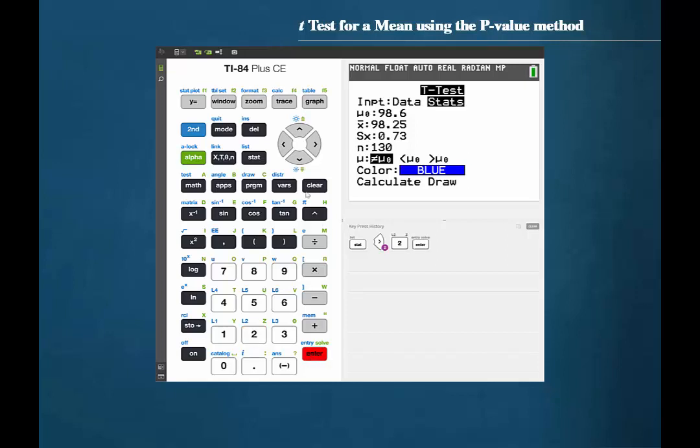Now cursor down and enter 98.6 for the hypothesized population mean. Cursor down and enter 98.25 for the sample mean. Cursor down and enter 0.73 for the sample standard deviation. Cursor down and enter 130 for the sample size.